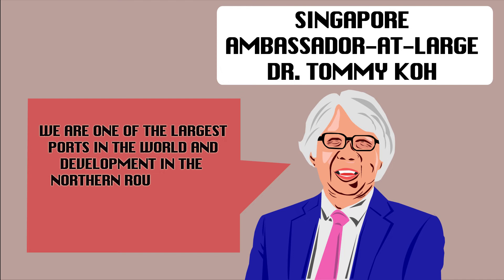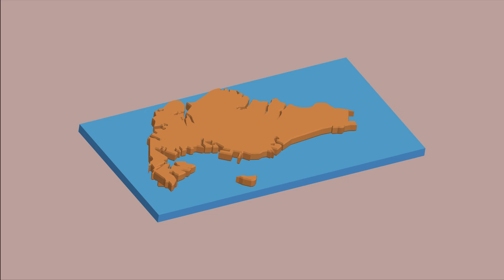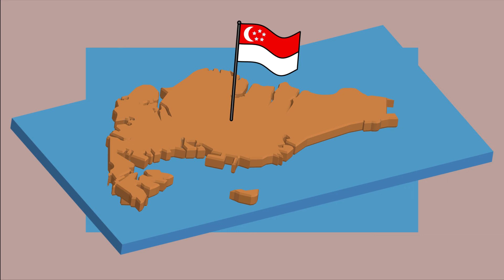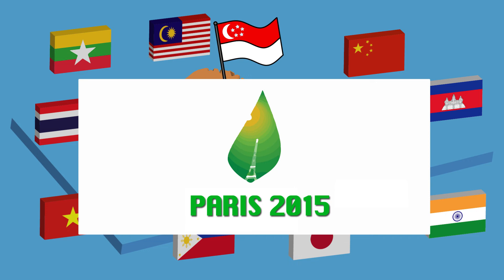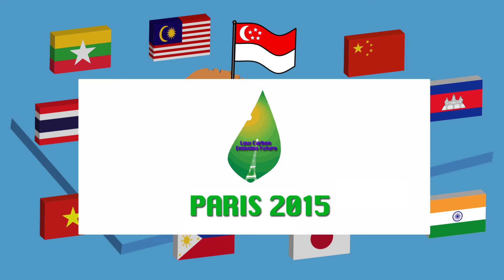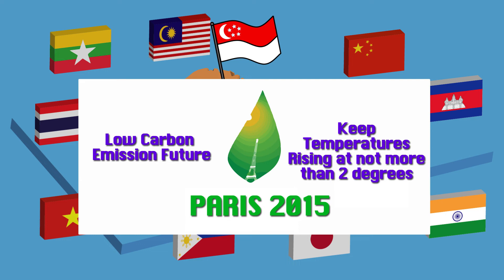Contrary to popular belief, what happens in the Arctic does not just stay in the Arctic. Singapore, as a small island state, is especially vulnerable to the effects of climate change. Many countries are committed to reducing the impact of climate change, and their participation in the Paris Agreement speaks volumes on the severity of this issue. In the Paris Agreement, countries pledge towards a low-carbon emission future, keeping temperatures rising at not more than 2 degrees Celsius. Above these rates, we would see severe negative impacts such as ice sheet collapse, mass extinctions, coral reef bleaching, wildfires, and climate-induced migration.